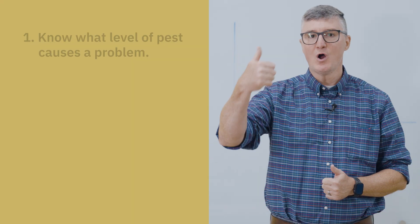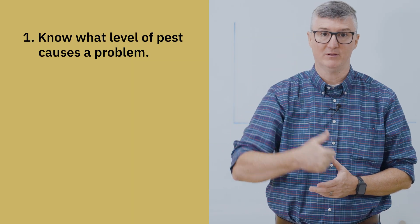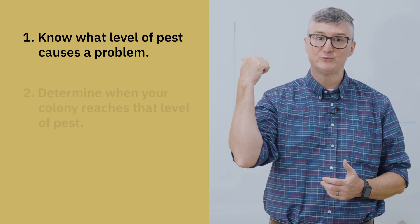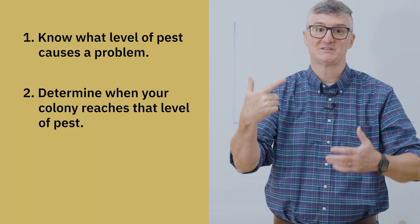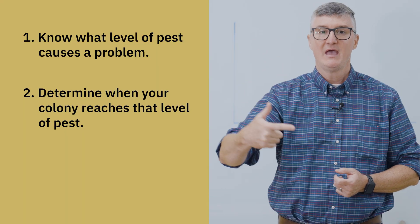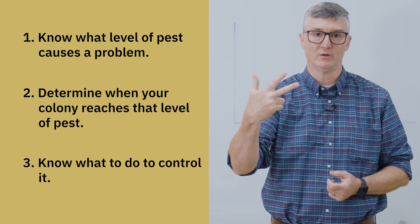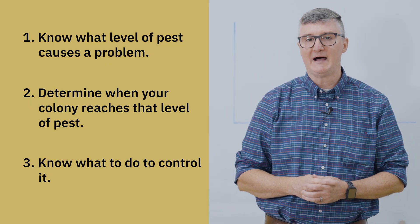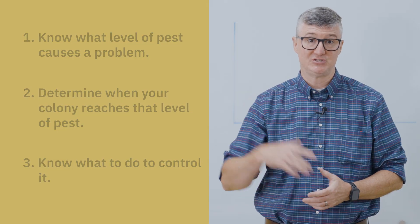You've got to know what level of pest causes a problem. You've got to be able to determine when your colony reaches that level of pest. And then you've got to know what to do to control it. The ultimate goal of IPM is to integrate multiple strategies to achieve maximum control of a particular pest.